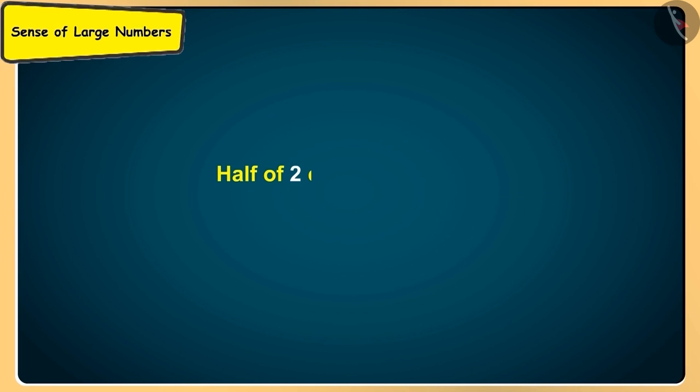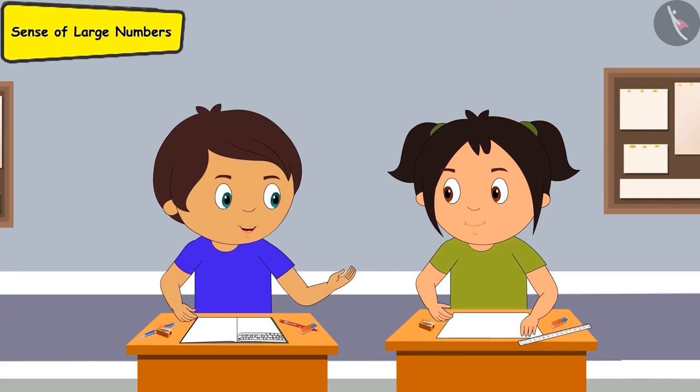The total population is 2 crores. Half of this will be 1 crore. But Didi, how did this happen?